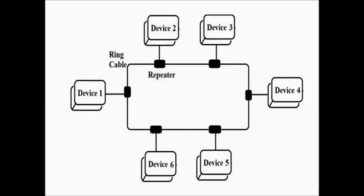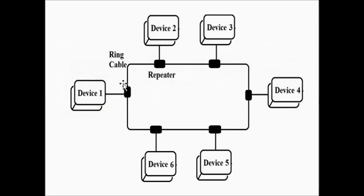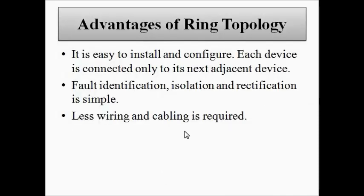Now let us discuss the advantages and disadvantages of ring topology. In ring topology, only a single ring cable is required as the main channel, along with device and repeater pairs. So the amount of wiring required is very less. As less cabling and wiring is required, the cost of wiring and installation is also very low. The installation process is very easy, and the identification of faults or defects in the network is also simple. These are the advantages of ring topology.